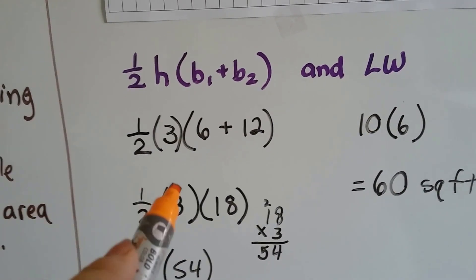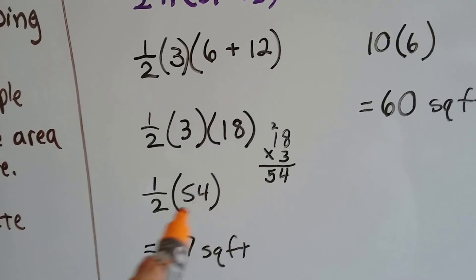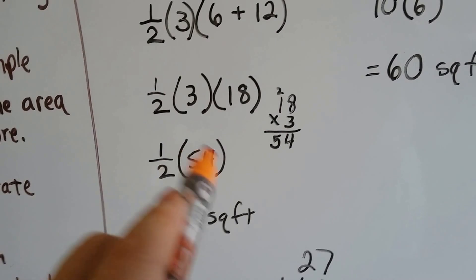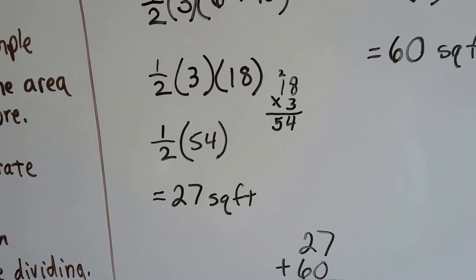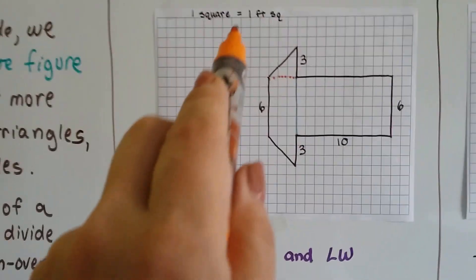So, that means 6 plus 12. That means 18. So, now we've got half times 3 times 18. Well, 3 times 18 is 54, so now we need half of 54. 54 divided by 2, or half times 54, is 27 square feet. Because remember, it was all in square feet, according to the key.